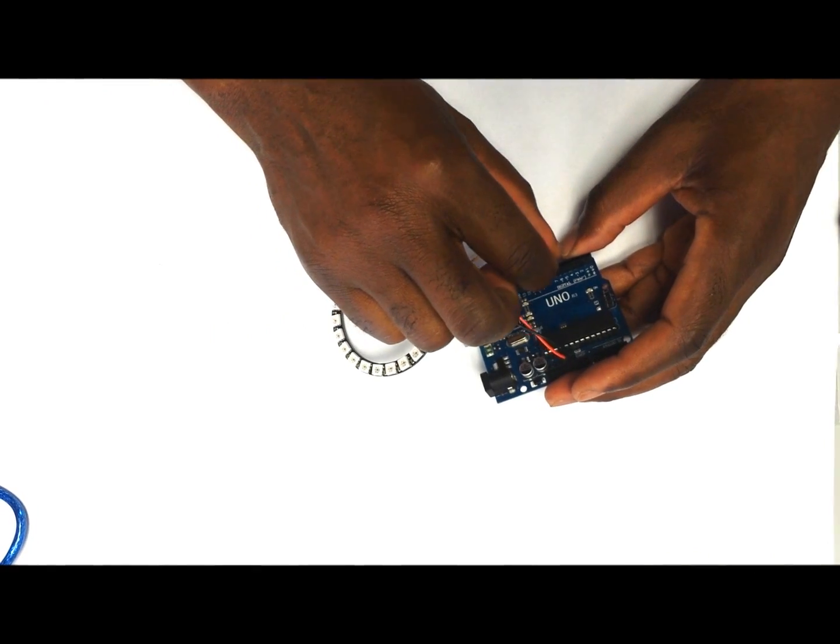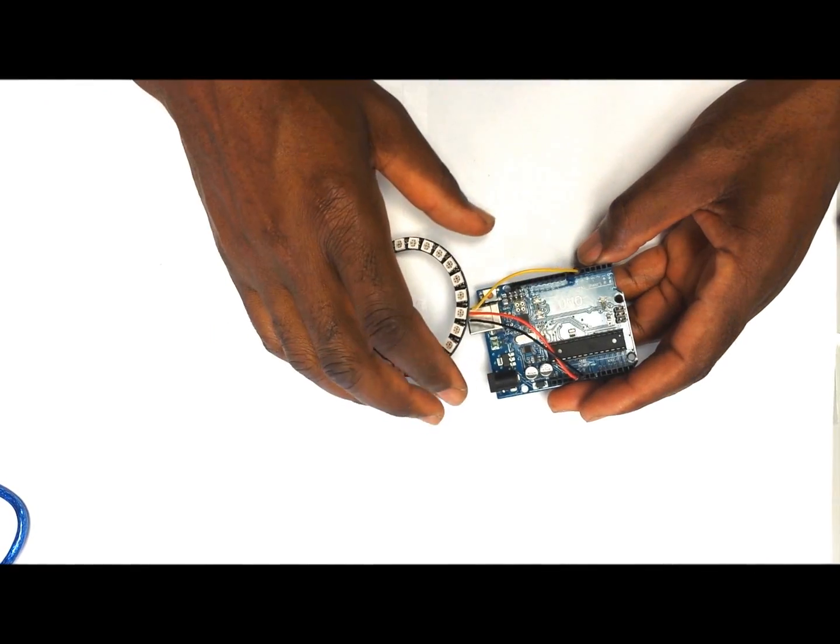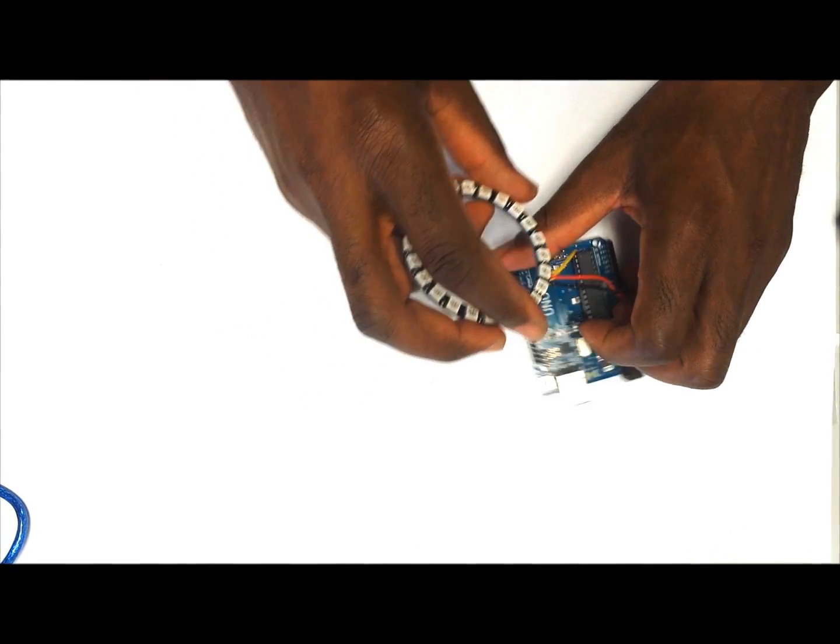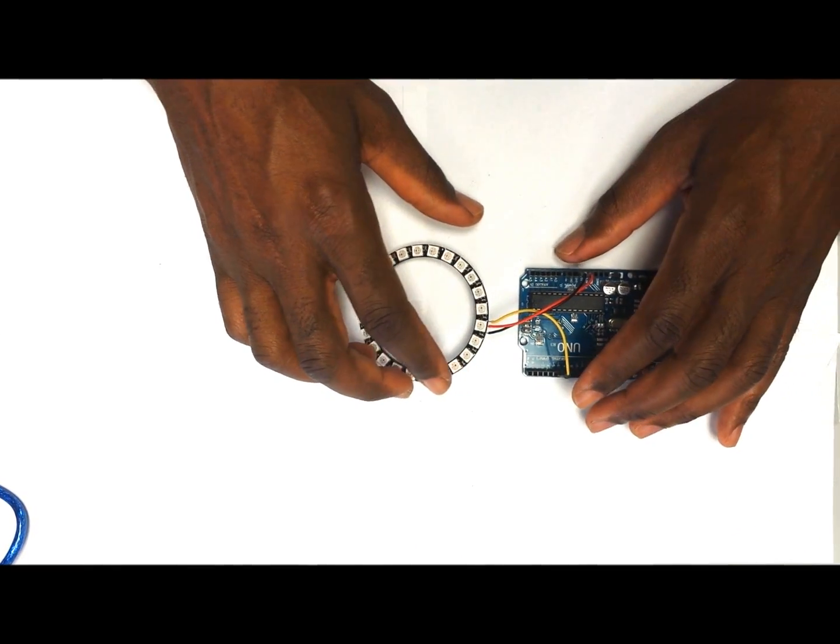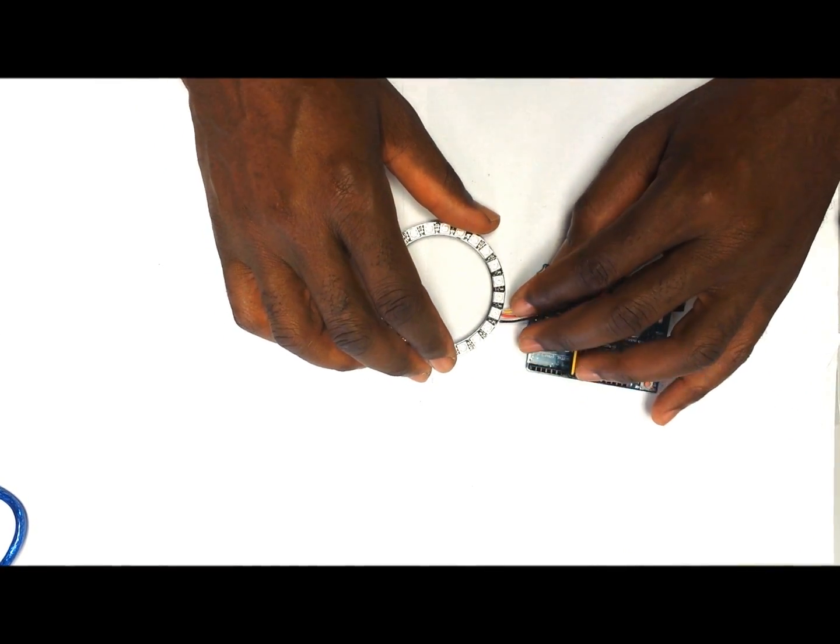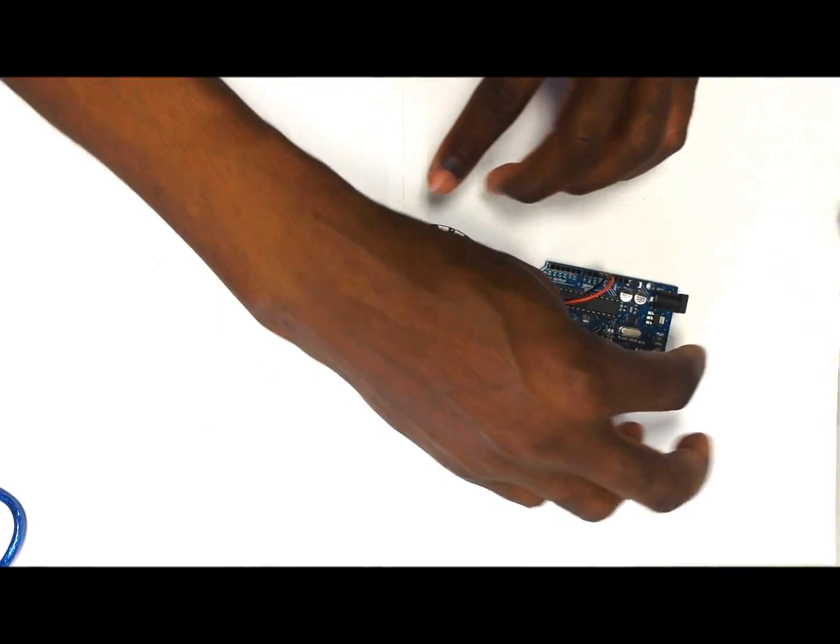The third wire, which is for signal, is going to go to pin number six on the Arduino. I'm going to give you the link to Adafruit's website for the code so that if you want to go and try it, you can just get it from there.